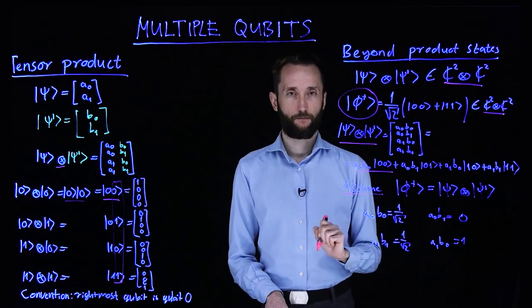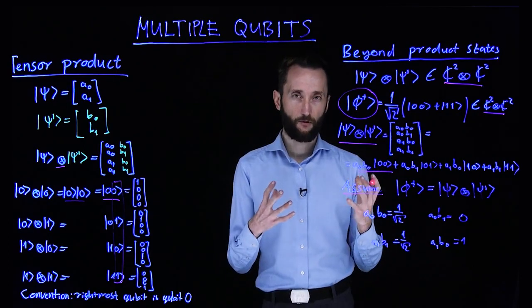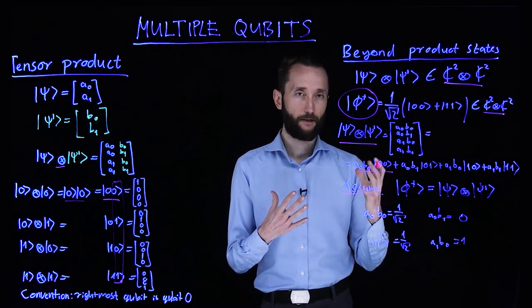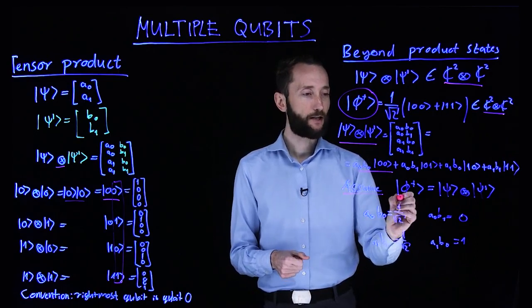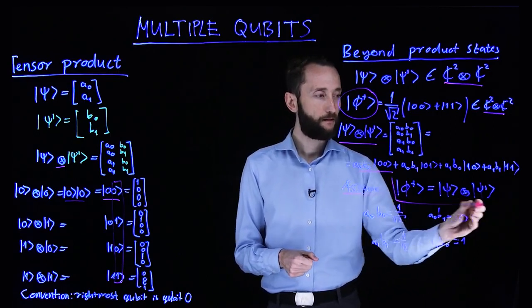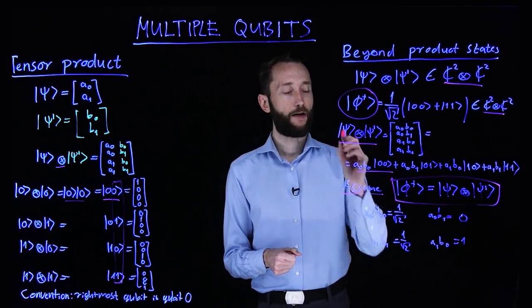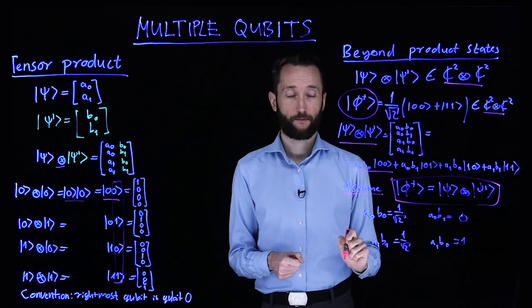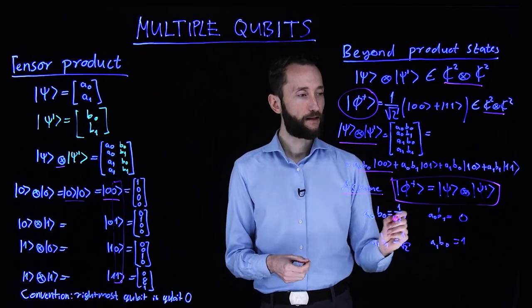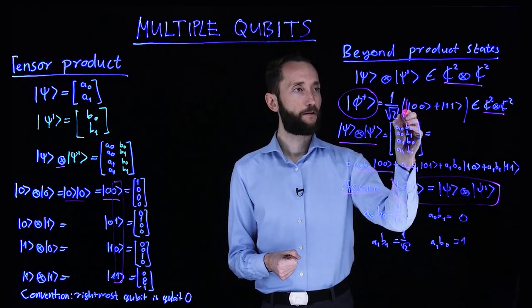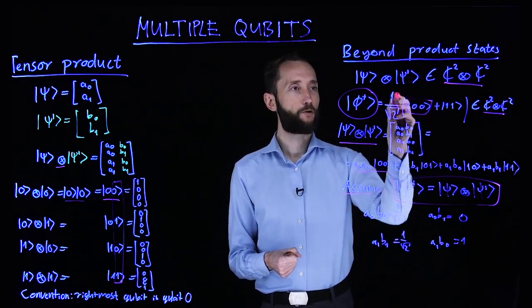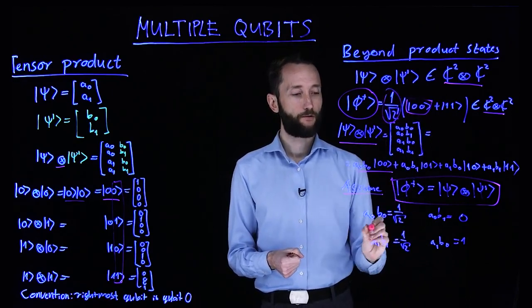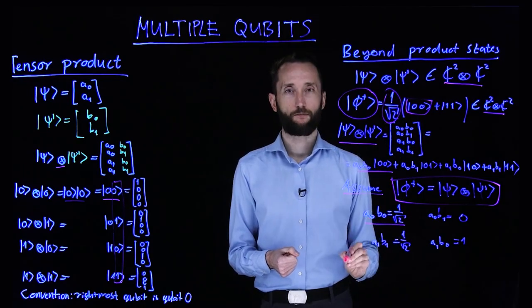And let us assume that there is some combination of these ai and bj values such that we can write this phi plus state as a product state. So this means that here we have 0, 0 cat with a coefficient 1 over square root 2, so this equation must be fulfilled.